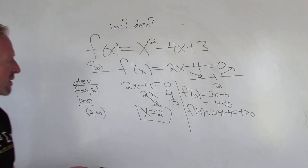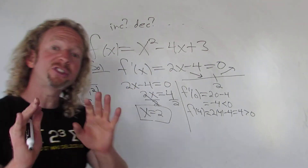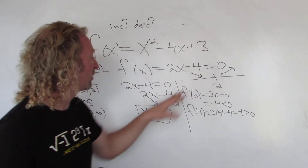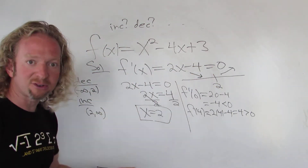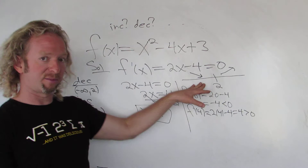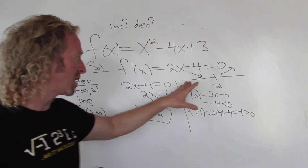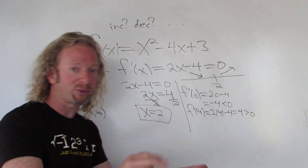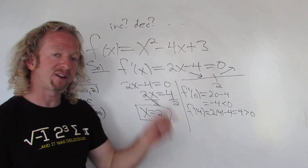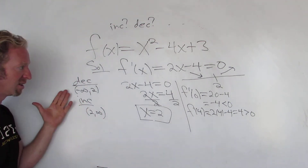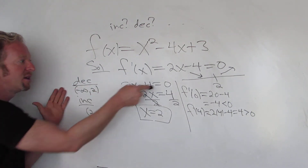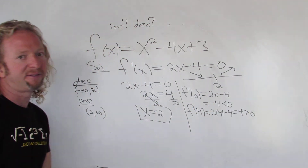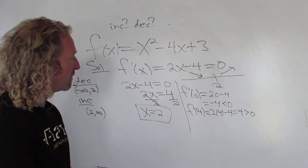So to summarize: step 1 — take the derivative, look to see if it's undefined anywhere, make a note of it. Set it equal to zero and solve. Put all the answers on a number line, then pick test points in each interval and plug them into the first derivative. If it's positive, the function's increasing there; if it's negative, the function is decreasing there. So decreasing from negative infinity to 2, increasing from 2 to infinity. Hope that made sense!